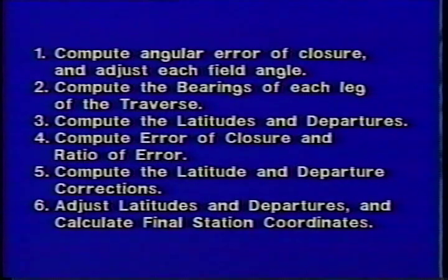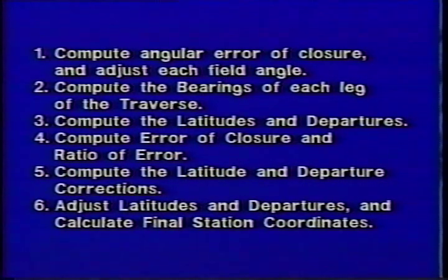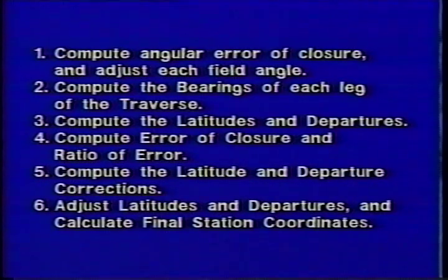The following steps are required for balancing the survey using a compass adjustment: computing the angular error of closure and adjusting each field angle, computing the bearings of each leg of the traverse, and computing the latitudes and departures. Also, we must compute the error of closure and ratio of error, compute the latitude and departure corrections, adjust the latitudes and departures, and calculate final station coordinates.